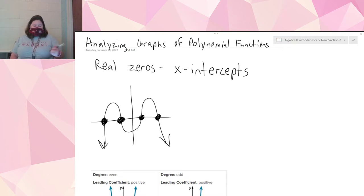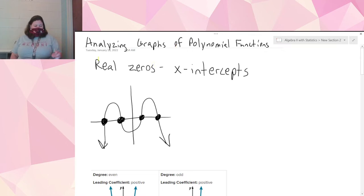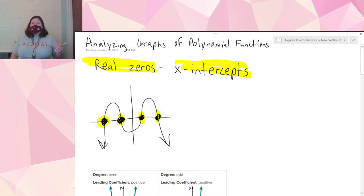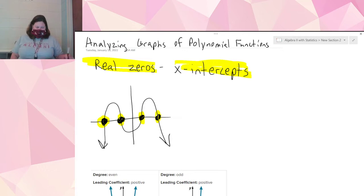The first thing we're going to talk about are real zeros. Polynomial functions have zeros based on the degree of that polynomial. So if a polynomial has a degree of four, that means it has four possible real zeros. Real zeros are x-intercepts. There are also unreal zeros where you'll have zeros of the polynomial but they won't occur on the x-axis — we talked about that a little with quadratics but we're not focusing on that in this unit.